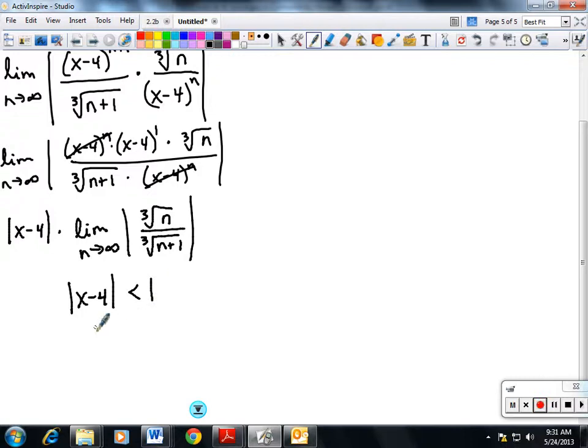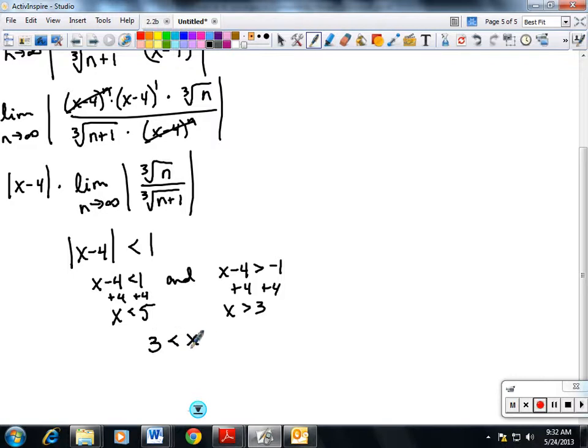And I'm going to solve my absolute value inequality. So x-4 is less than 1 and x-4 is greater than negative 1. So add 4, add 4. x is less than 5. x is greater than 3. So it's going to be from 3 to 5.